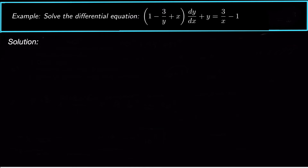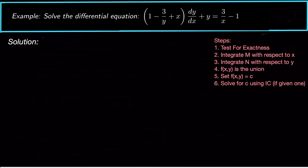So what we have to do is get it in that form, and then we can go through and try to solve for the exact solution. The steps really are: test for exactness, then integrate m with respect to x, integrate n with respect to y, find f(x, y) as the union of those two integrations, and then set f(x, y) equal to a constant and solve for c if you have an initial condition.